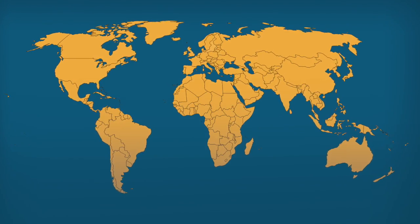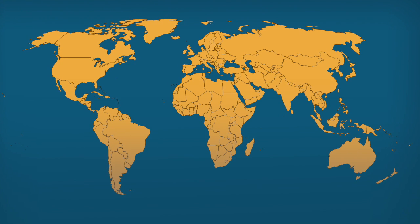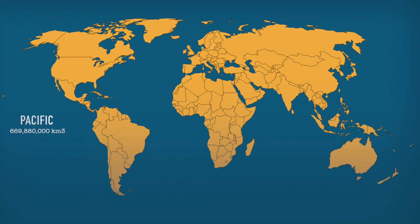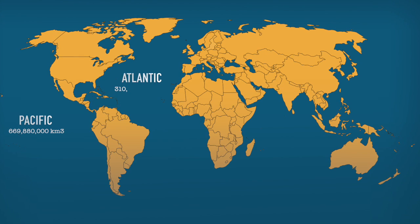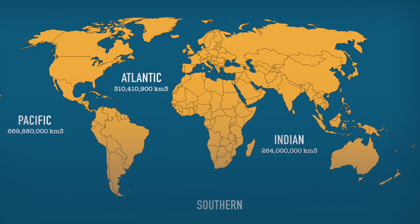The Earth has a lot of oceans. The Pacific Ocean is home to 669 million cubic kilometers — that's 50% of the Earth's oceans. The Atlantic has 310, the Indian 264, the Southern 71, and the Arctic 18.